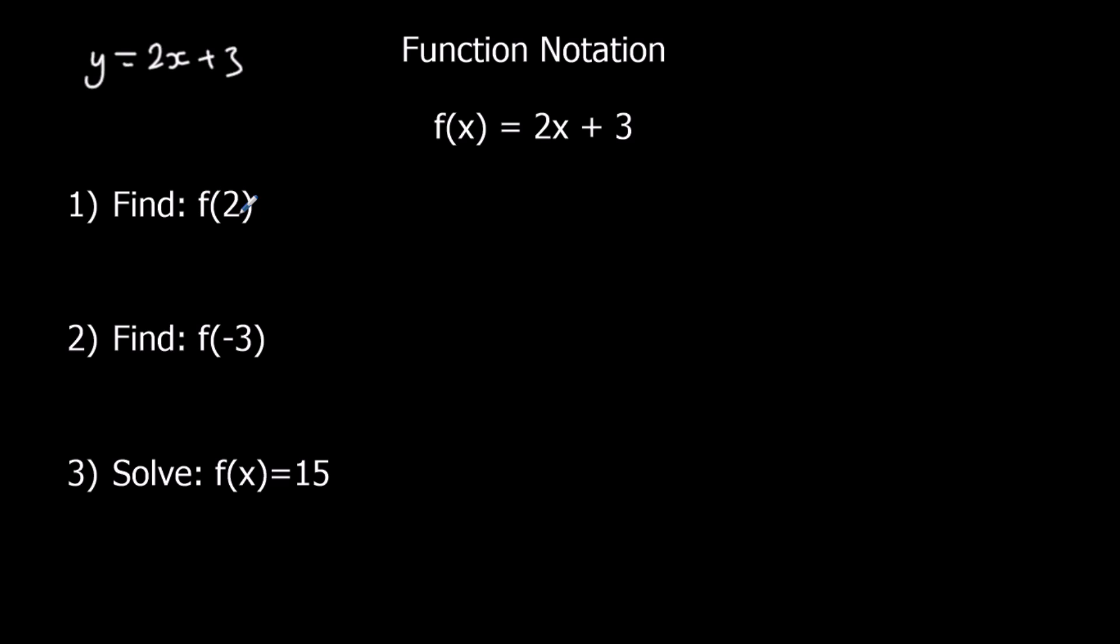So here, find f of 2. That means the input, the x, is 2. We're putting 2 in, and it's asking what do we get out? So f of 2 is 2 times 2, because x is now 2, plus 3, which is 4 plus 3, which is 7.